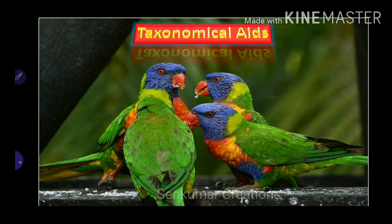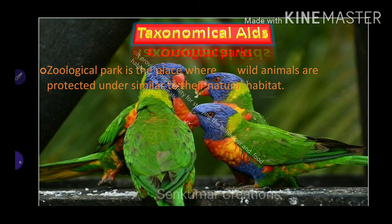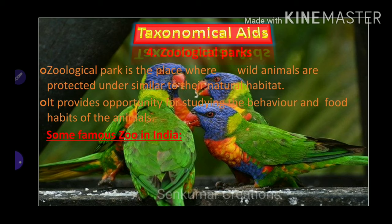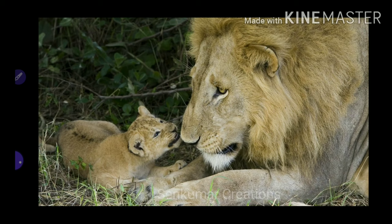Zoological parks: a zoological park is a place where wild animals are kept under conditions similar to their natural habitat. It provides opportunities for studying the behaviour and food habits of animals. Some famous zoos in India include the Zoological Park Mysore, Nehru Zoological Park at Hyderabad, Trivandrum Zoo, and Chennai Zoo.